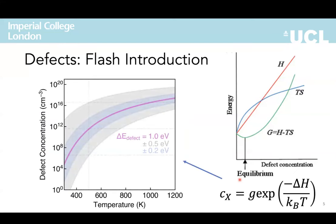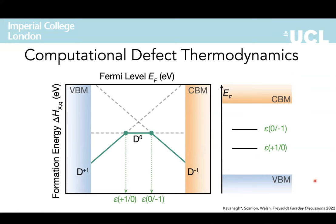An important point from the defect concentration equation is the exponential dependence on the formation enthalpy ΔH, meaning our predicted defect concentration is extremely sensitive to our predicted formation energy. This is shown in the graph on the left: even relatively small errors of around 0.2 to 0.5 eV in the formation energy can lead to concentrations varying by several orders of magnitude. This means it is really important to get accurate formation energies when predicting defect behavior.